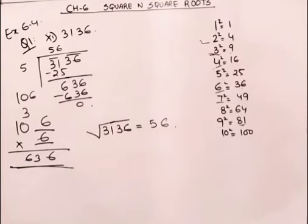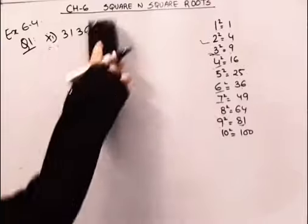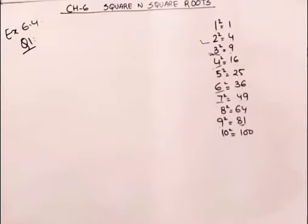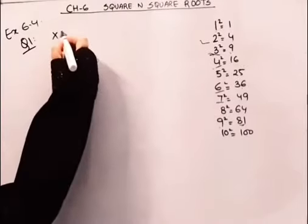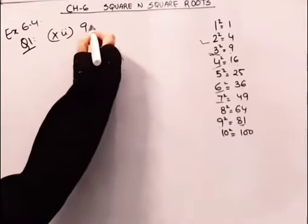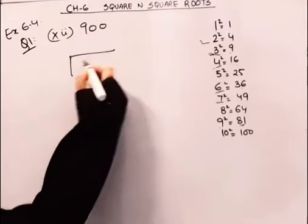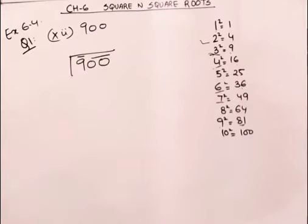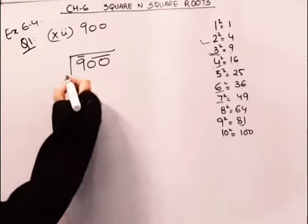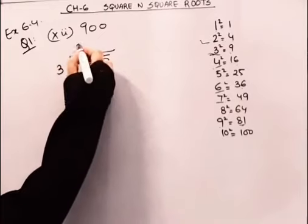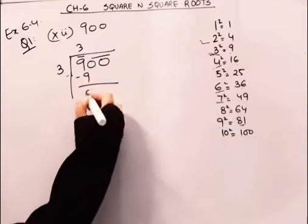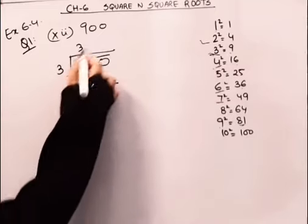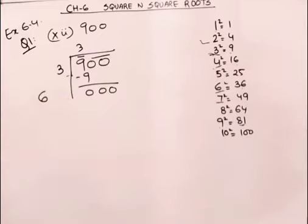Now I will move to the last part of this question, 12th part. That is 900. I will put bars. Yaha pe eh he number bacha, so sirf eh number pe hi bar aarega. 3, 3's are 9. So it gets 0 here. 3 plus 3 is 6.